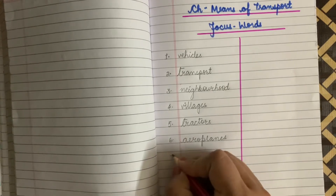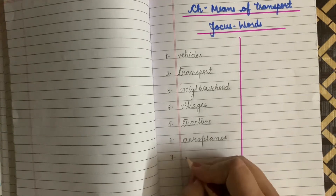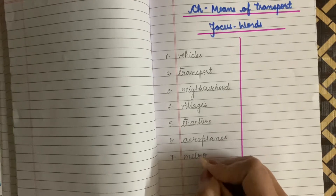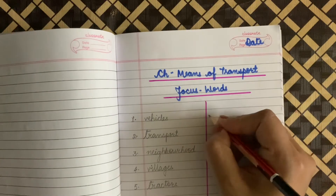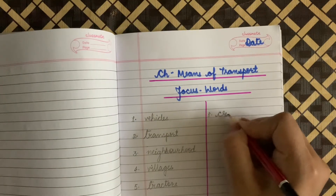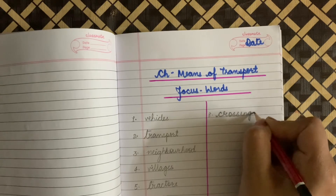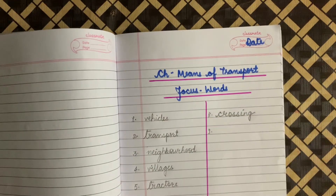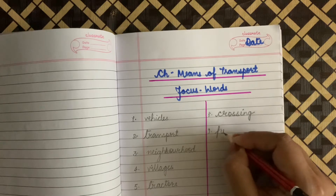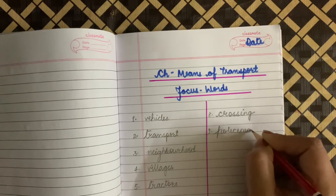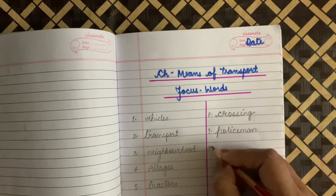The next word is Metro. M-E-T-R-O, Metro. The next word is Crossing. C-R-O-S-S-I-N-G, Crossing. The next word is Policeman. Write down Policeman. P-O-L-I-C-E-M-A-N, Policeman.